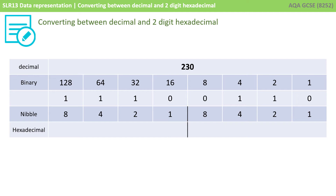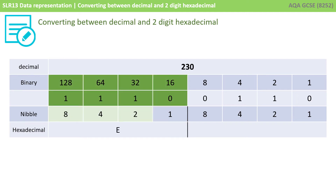230 in decimal written in binary is 1, 1, 1, 0, 0, 1, 1, 0. I start with my left-hand nibble — the left four bits — with a mini binary weighting line of one, two, four, eight. I've got a one in the eight column, a one in the four column, and a one in the two column. Eight plus four plus two is fourteen. Of course, we don't use the number fourteen in hex — we use the letter E.